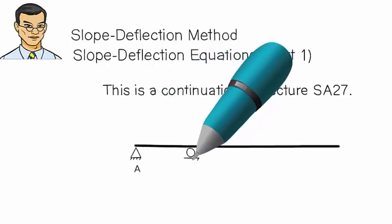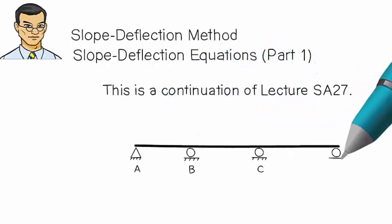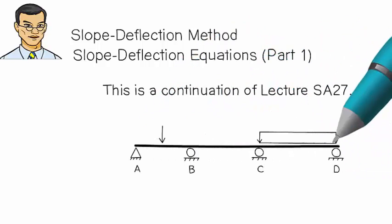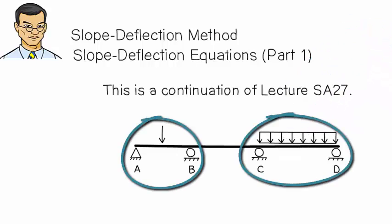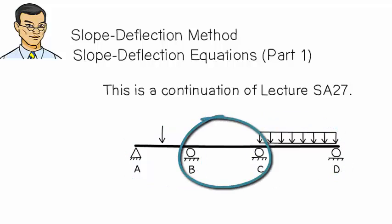Imagine a continuous beam having multiple segments. A typical beam segment could be subjected to external loads, like segments AB and CD, or could be external load free, like segment BC. Let's consider each case separately.